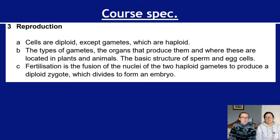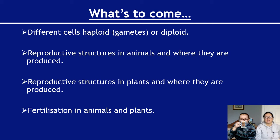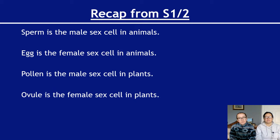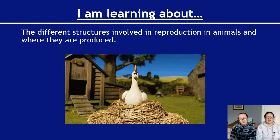The layout goes: we're looking at the definitions of haploid and diploid, then we'll look at the reproductive structures in animals and where they're produced, then fertilization in animals and plants. The second video covers reproductive structures in plants and fertilization specifically in plants. You should remember that sperm is the male sex cell in animals, egg is the female sex cell in animals, pollen is the male sex cell in plants, and the ovule is the female sex cell in plants.